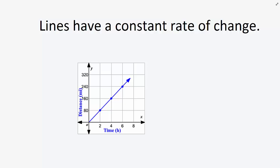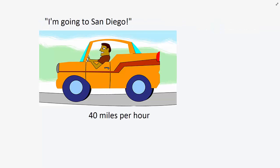Graphs that make lines all have an important characteristic in common. The rate of change is constant.